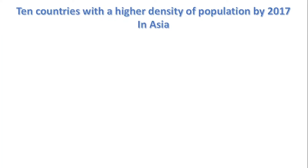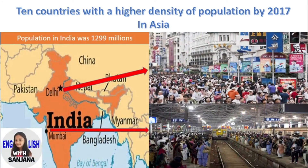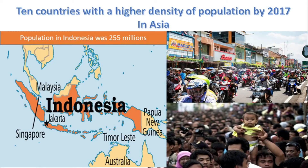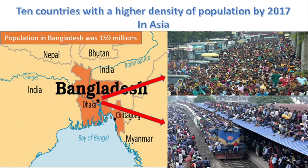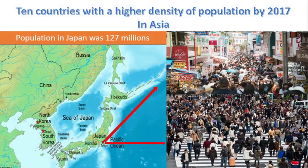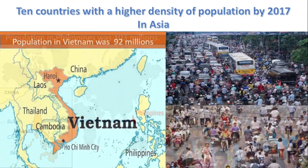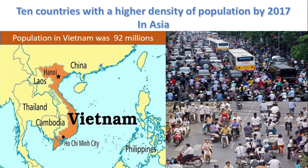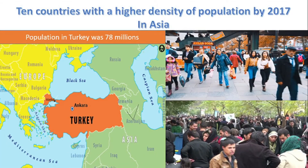Now it's time to remind you of 10 countries with a higher density of population in Asia by 2017. Population in China: 1,370 million. Population in India: 1,299 million. Population in Indonesia: 255 million. Population in Pakistan: 192 million. Population in Bangladesh: 159 million. Population in Japan: 127 million. Population in Philippines: 103 million. Population in Vietnam: 92 million. Population in Iran: 79 million. Population in Turkey: 78 million.